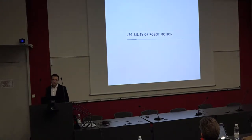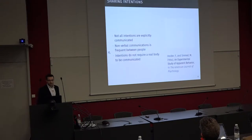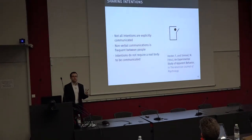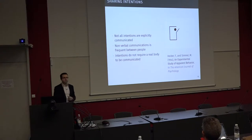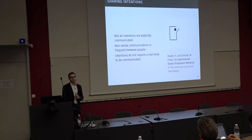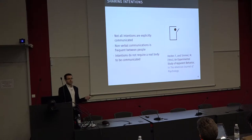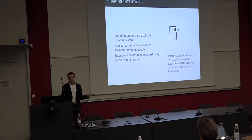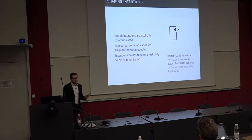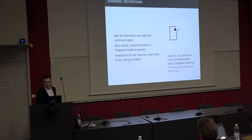Let me start with the legibility of robot motions. When we cooperate, we have two modes of communication: implicit and explicit. But actually, we mostly use implicit communication. And if we want robots that work with people, we need to understand implicit communication and probably also behave the same way in order to communicate with people. Luckily, these implicit communications do not require a real body to work. Let me start with a video that will prove that point.